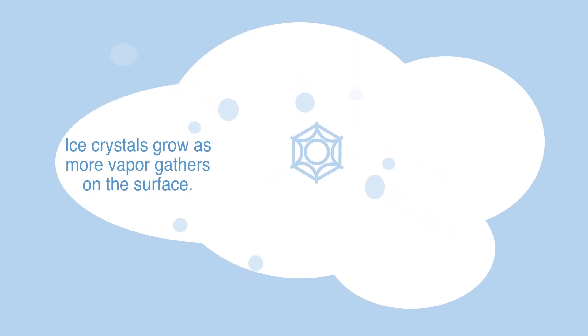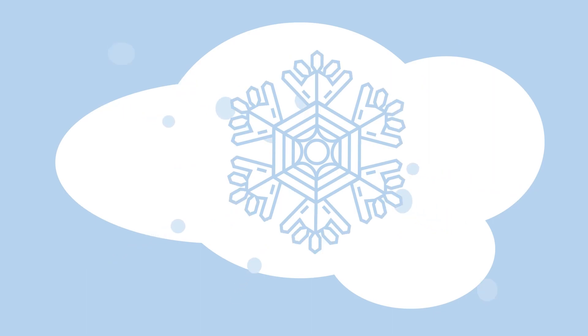As the crystal tumbles through the clouds, more water vapor latches on and it grows. It can sprout into lots of different shapes, from needles, columns, lacy patterns called dendrites, but it always maintains six sides.